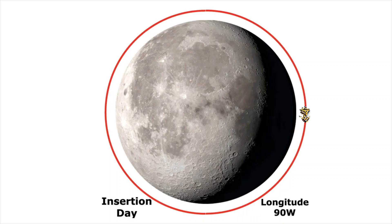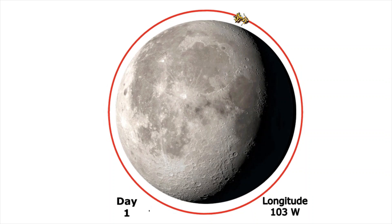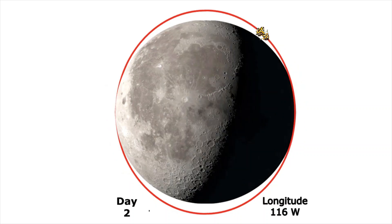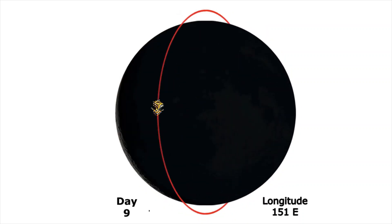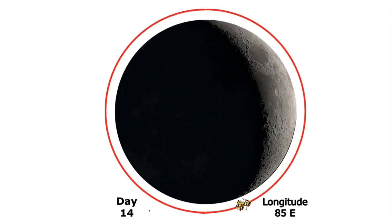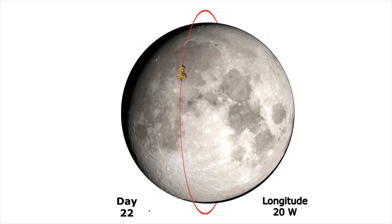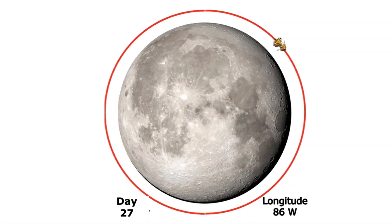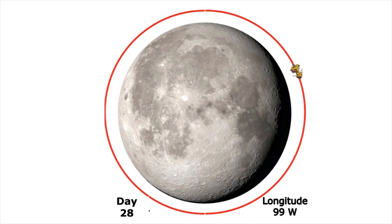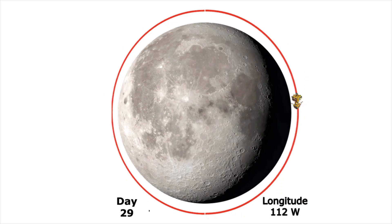If a satellite is inserted into the lunar polar orbit at 90 degrees west longitude, then the orbit would move to 103 degrees west longitude on day 1, and to 116 degrees west longitude on day 2. For every day, the increment of longitude of the orbit is 13.2 degrees. On day 27, the longitude would be 86 degrees west. On day 28, the longitude would be 99 degrees west after completing one full rotation.